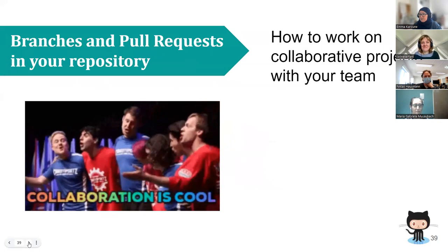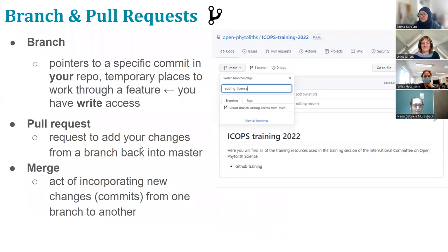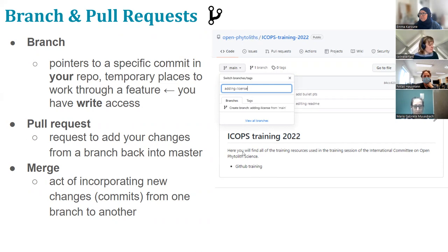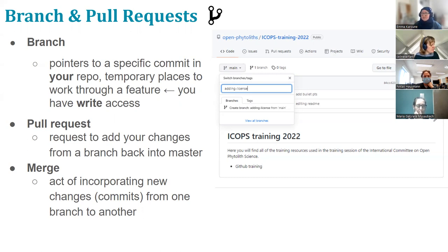Let's quickly go through branches. It's very similar to what you've done with forking, except you are starting in the main repository — you're not pressing the fork button. Once the repository has been set up, if I wanted all of you to work on it, I would need your GitHub usernames and add you as collaborators, which gives you access to make changes on the actual repository.